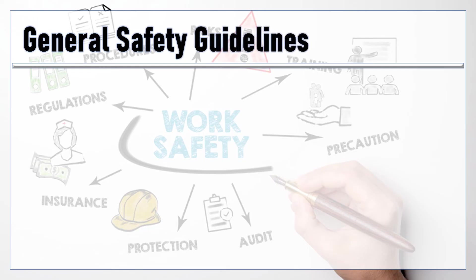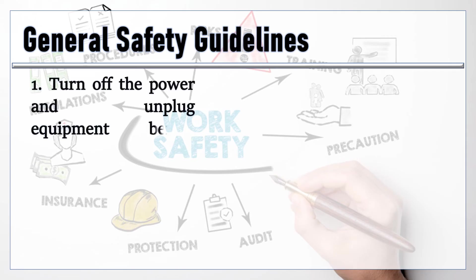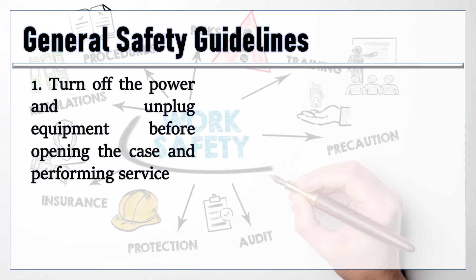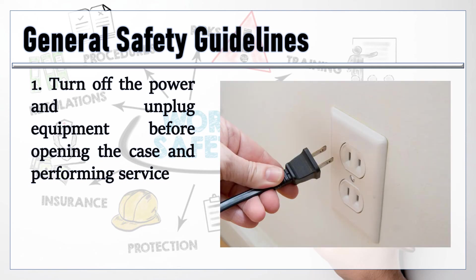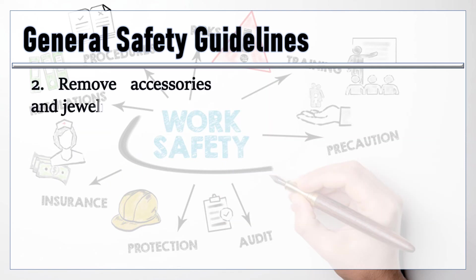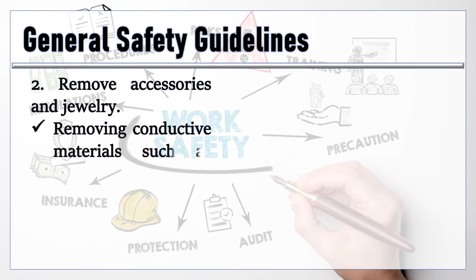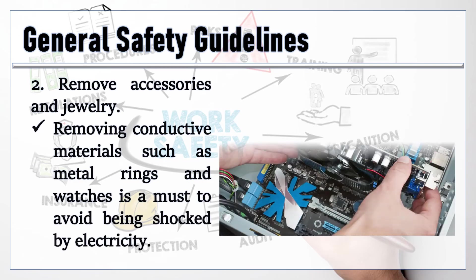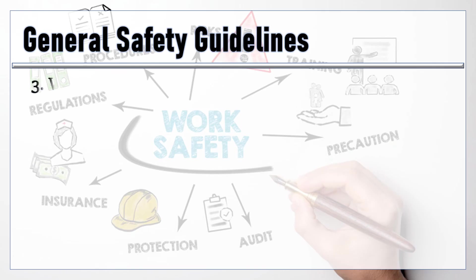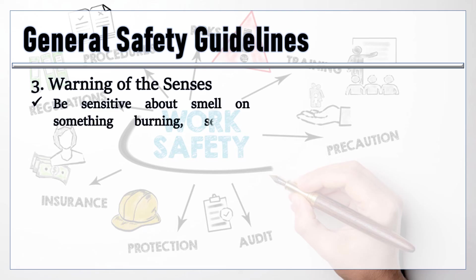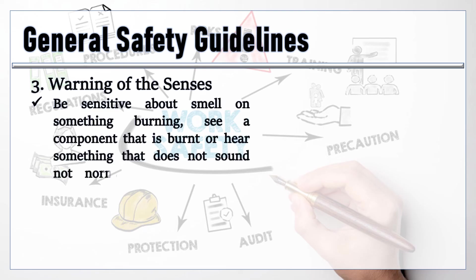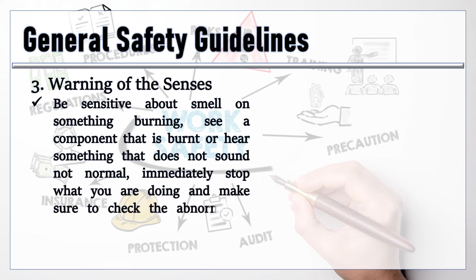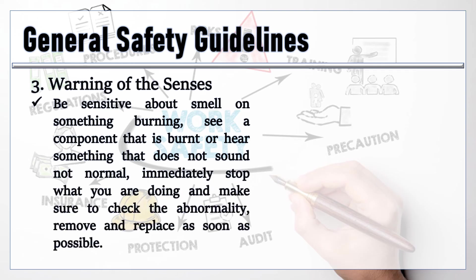There are general safety guidelines we must follow to maintain a safe and healthy workplace. 1. Turn off the power and unplug equipment before opening the case and performing service. 2. Remove accessories and jewelry. Removing conductive materials such as metal rings and watches is a must to avoid being shocked by electricity. 3. Warning of the senses — be sensitive to smelling something burning, seeing a component that is burnt, or hearing something that does not sound normal. Immediately stop what you are doing and check the abnormality.